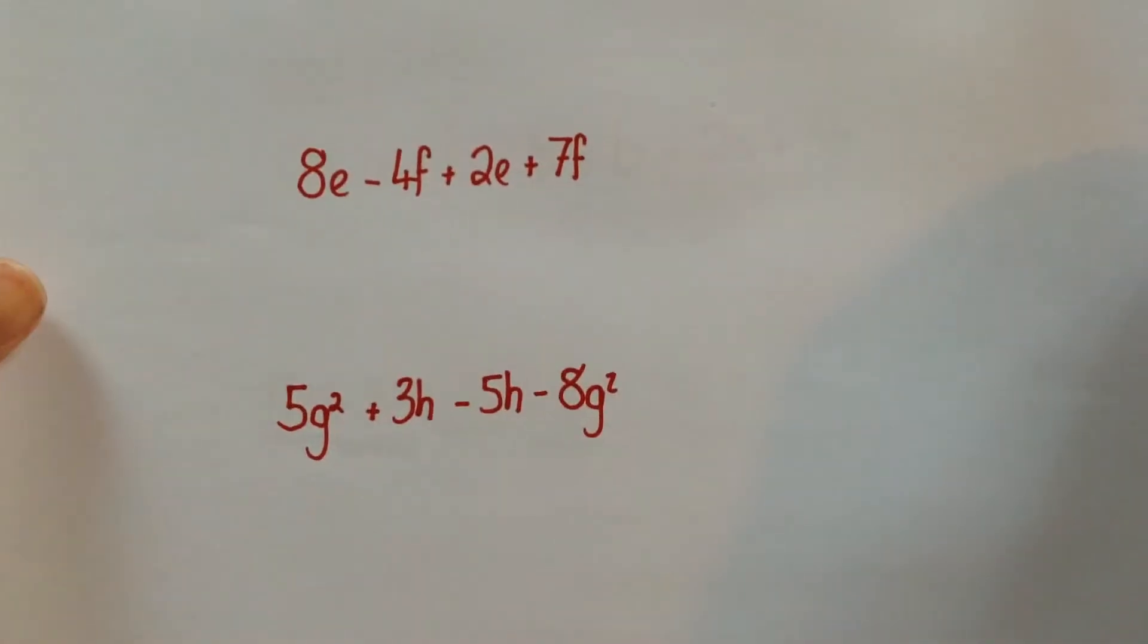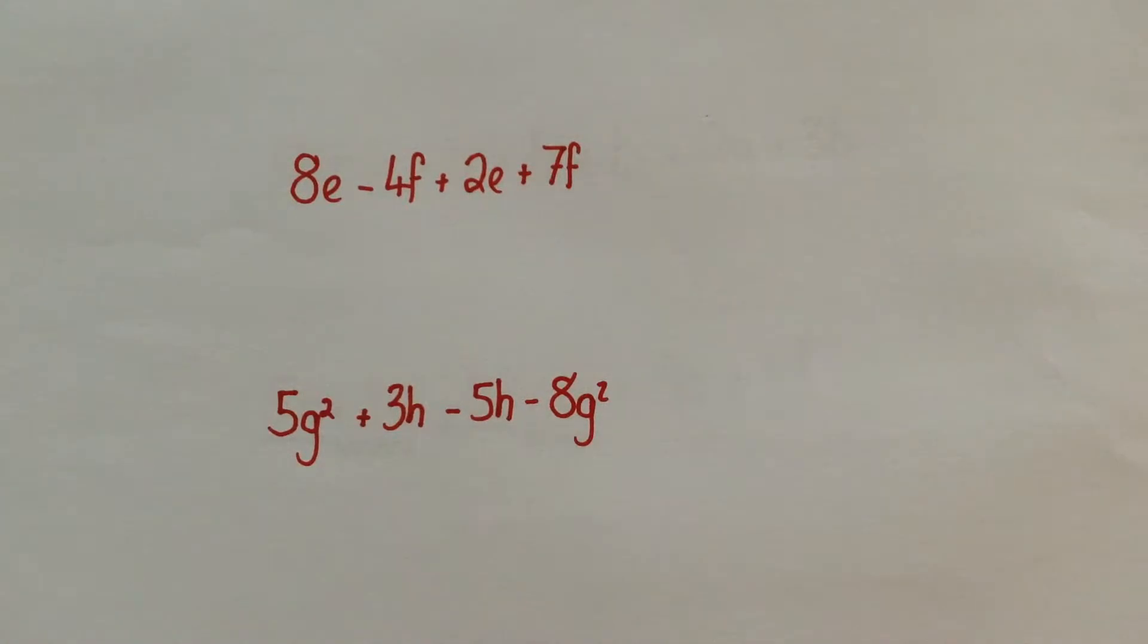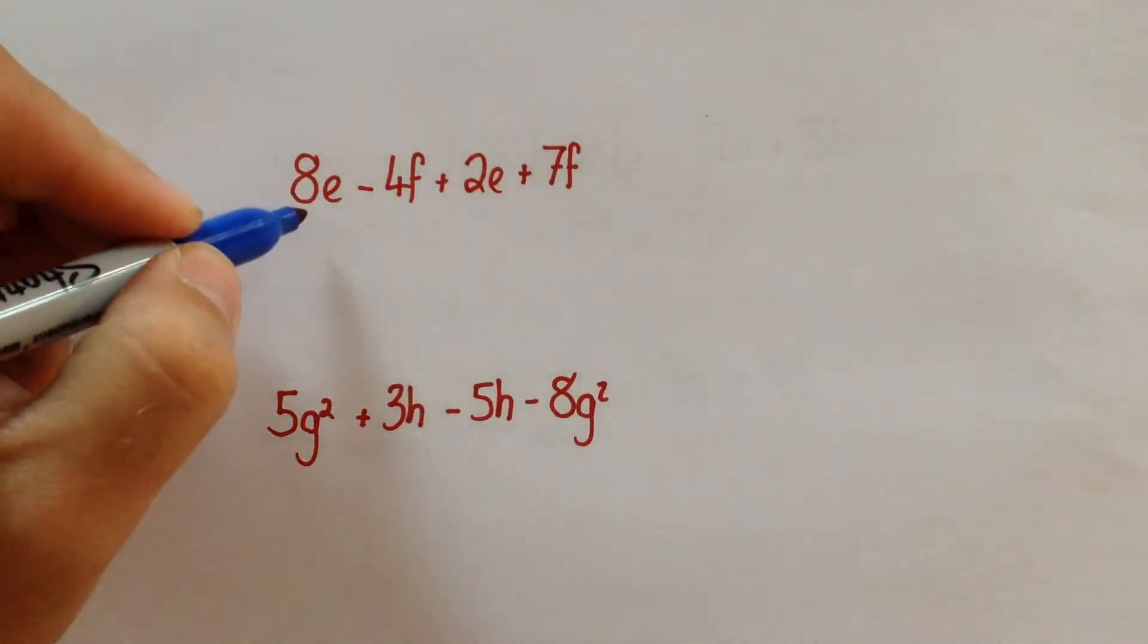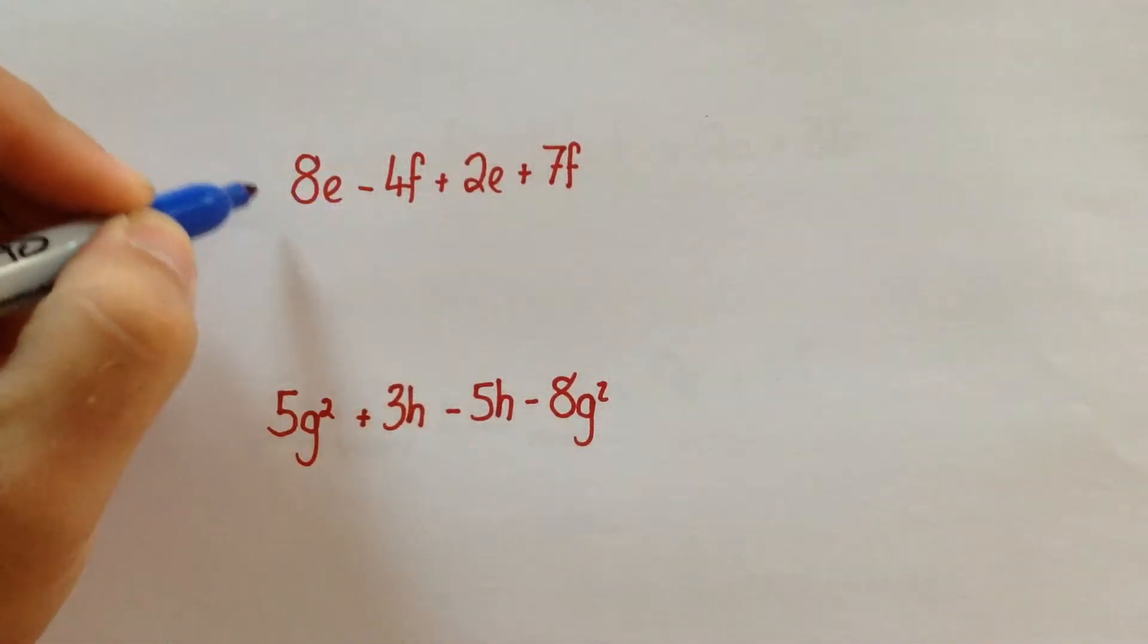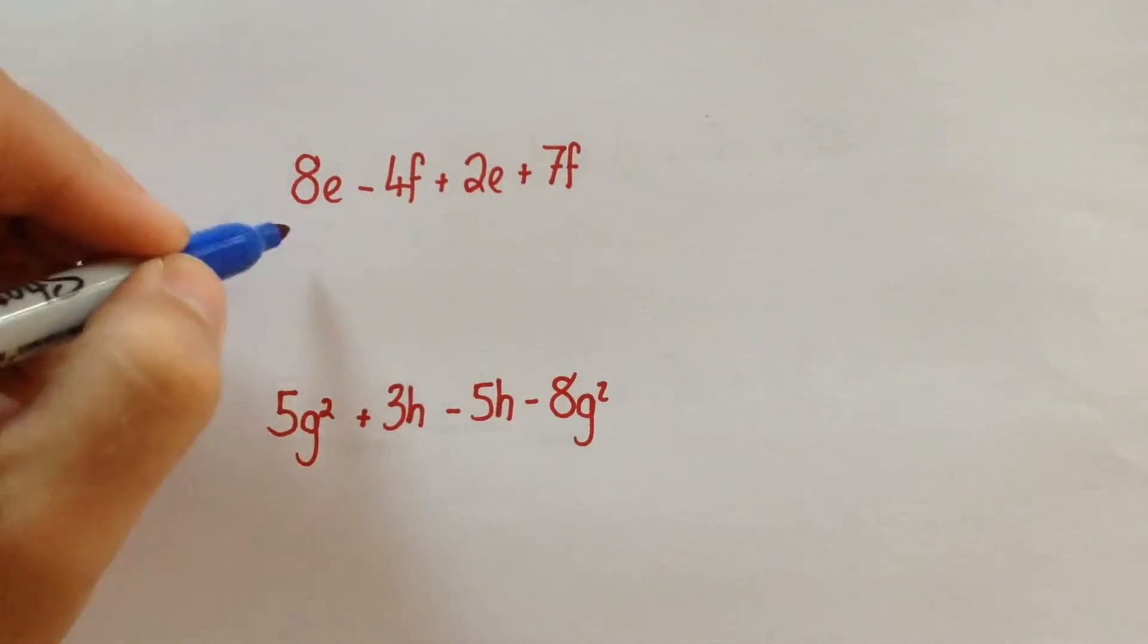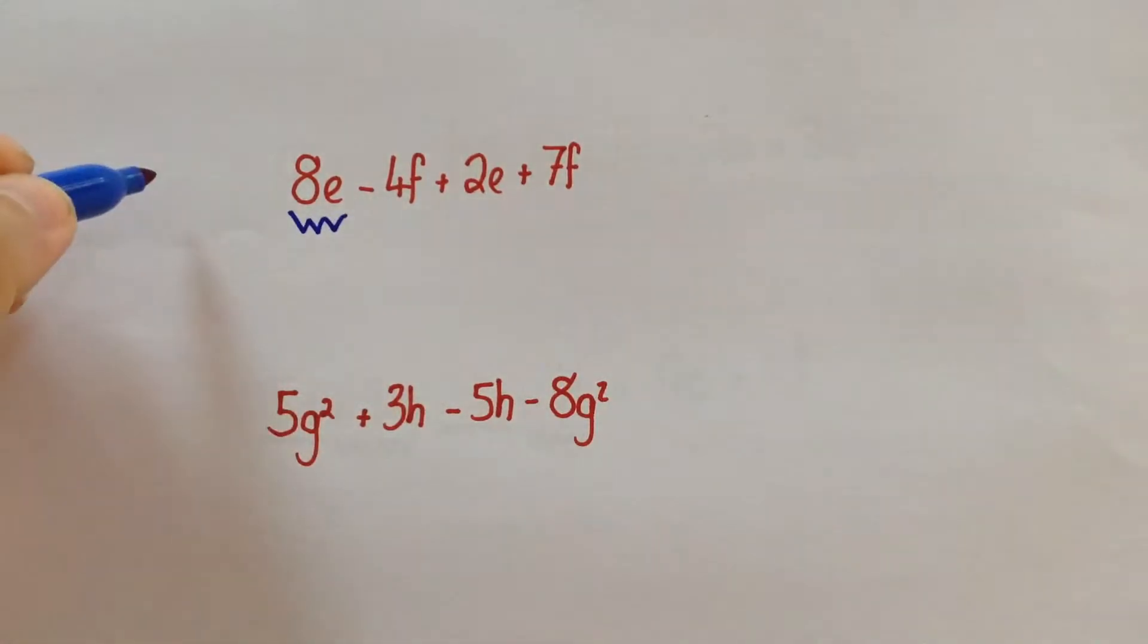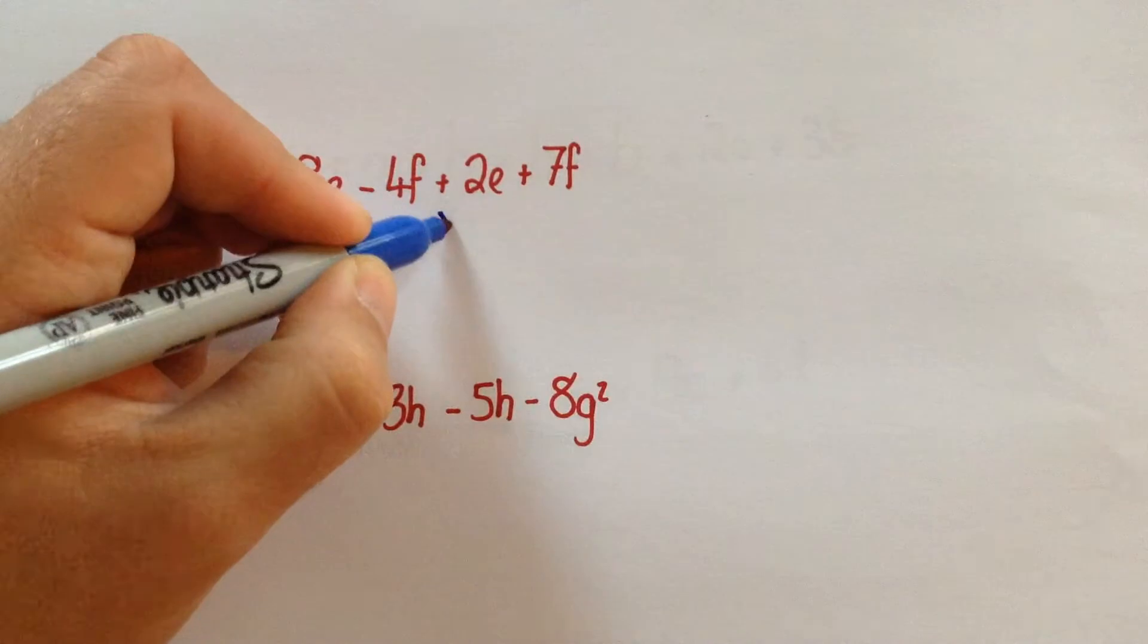For the next examples, we're going to start bringing in some minuses. Same idea. Start with one letter at a time. So 8E plus 2E.